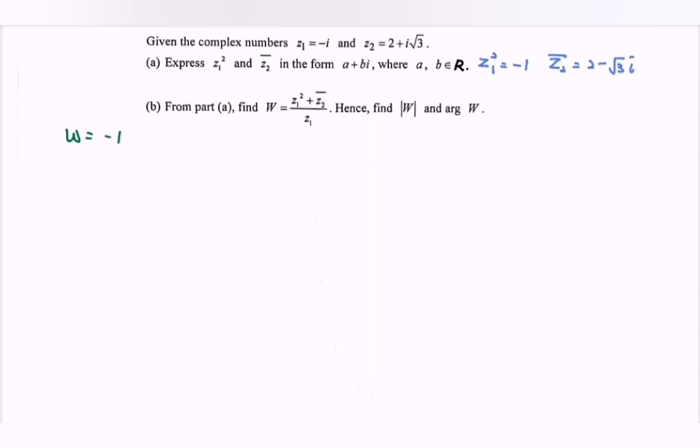Plus with the conjugate of z₂, so we have plus 2 minus square root of 3 i, over z₁, which is negative i.